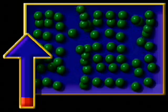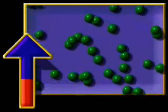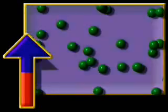In solids, molecules are tightly packed and maintain their shape. Add energy, like heat, and the molecules begin to separate and melt into a shapeless liquid. More energy, and matter turns into gas.